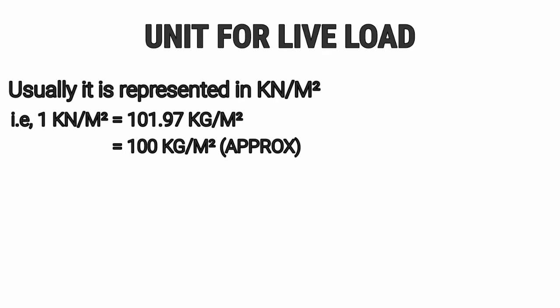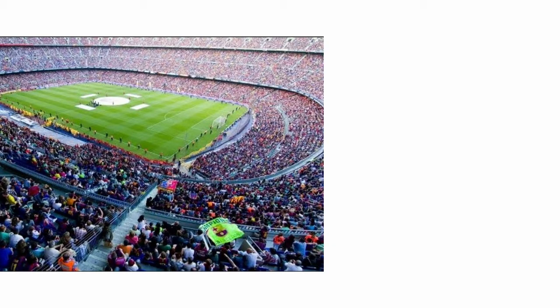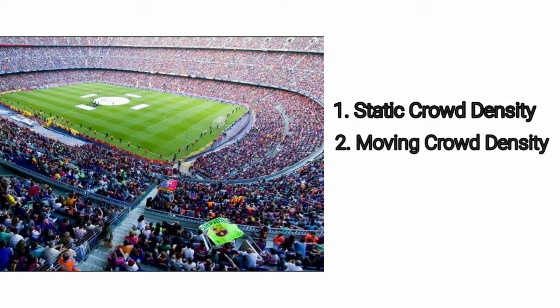For time being we shall assume 100 kg as a person. So 1 kN per m² is 1 person per m². We shall understand this in two parts: one is static crowd density and the other one is moving crowd density.